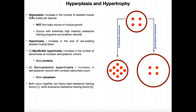There are other mammals where hyperplasia has a greater contribution, like rats and other rodents, but not in humans — not the major source of muscle growth. That's not to say it can't happen. It has actually been demonstrated that in extremely high intensity resistance training programs, you can get some hyperplasia. Again, it's not the major contributor, but it does occur.